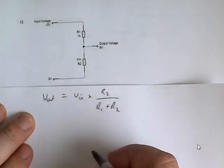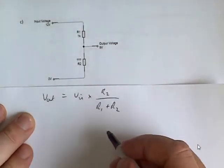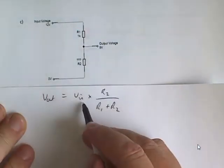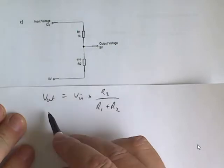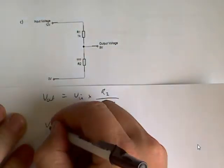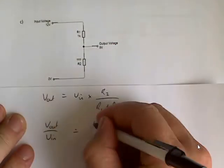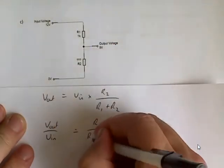This one might be a little bit tricky, and I'll show you some tricks along the way. So in this case what I'm going to do is divide both sides by V in to get the resistances on their own. So V out divided by V in equals R2 over R1 plus R2.